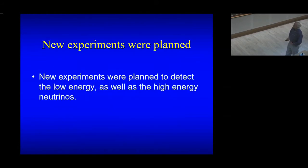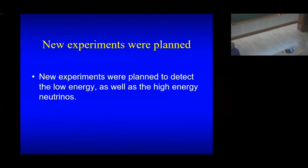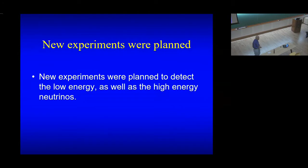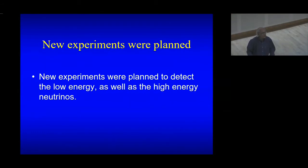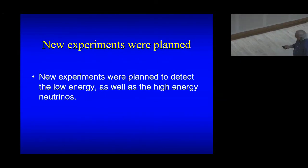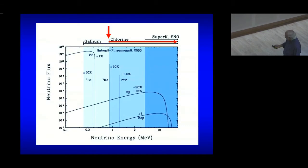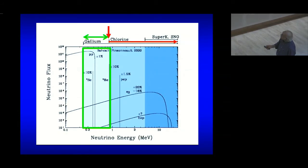People began to take Raymond Davis seriously — something was wrong. Then somebody remembered: Davis's experiment can only detect the high-energy neutrinos, and there are very few of them. Let's try to detect the low-energy neutrinos and see what answer we get. New experiments were planned using gallium as a detector instead of chlorine. The gallium detector was sensitive to the proton-proton neutrinos, of which there are a large number.